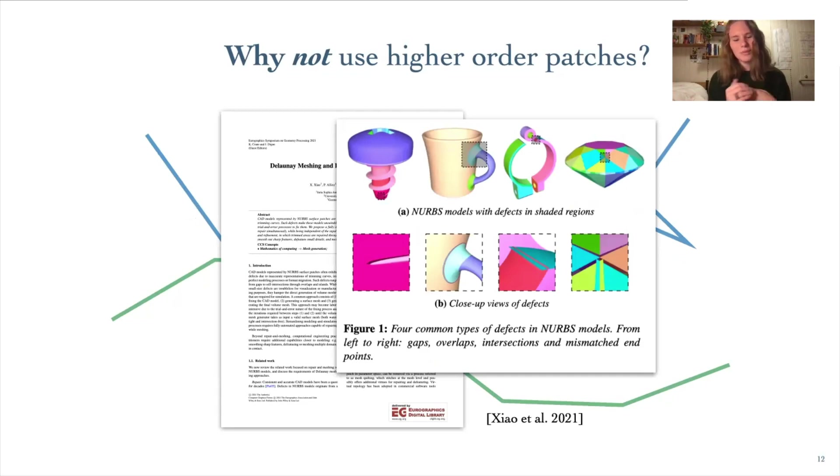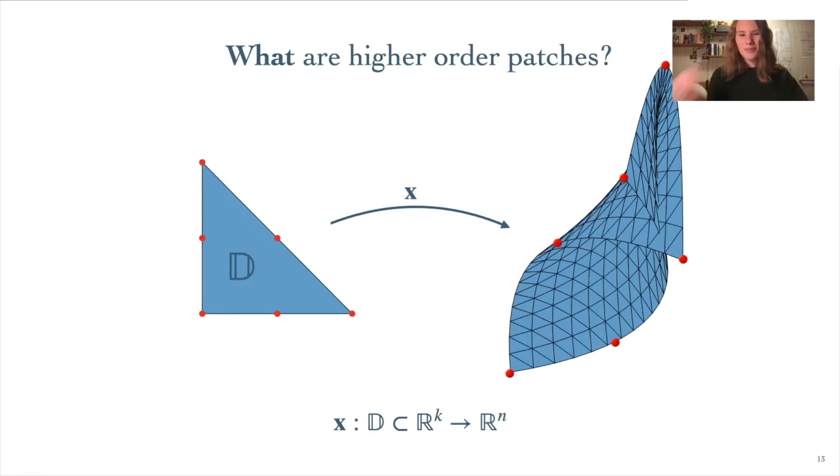But first, let's formalize this problem by precisely defining the patches we're going to be working with. We'll represent our patches as a map from some base domain into our desired space. So for example, here we see a map from a 2D triangle into a 3D space. In this example, I'm drawing a net over the resulting triangle patch, and this is just to make it easier to see the shape. Remember that it's still just one patch.